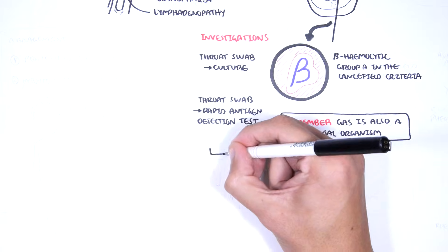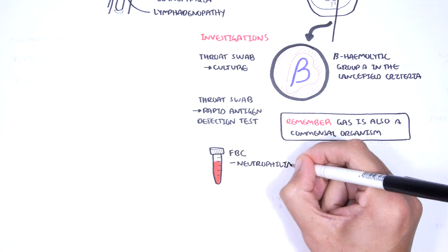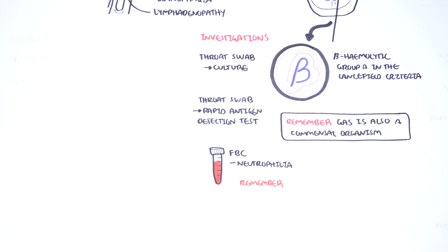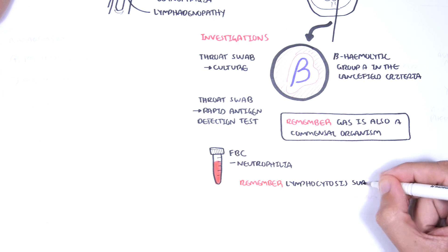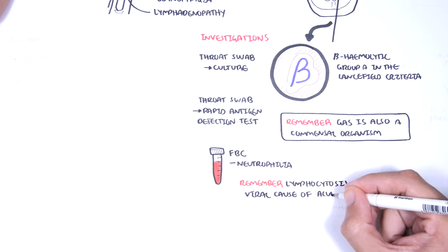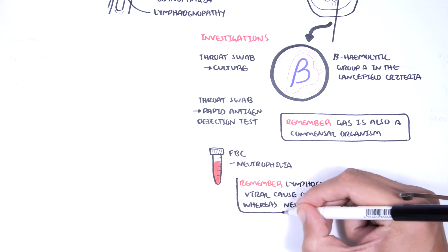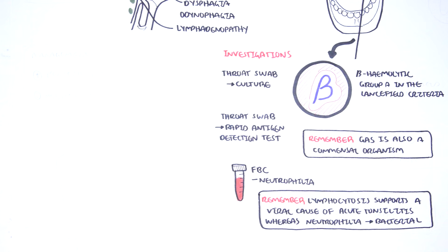Other investigations for Group A Streptococcus related tonsillitis include a full blood count, which will show neutrophilia. Now, it's an important concept to remember to help differentiate viral and bacterial tonsillitis. Remember, lymphocytosis supports a viral cause of acute tonsillitis, whereas neutrophilia, high neutrophil count, supports a bacterial cause.